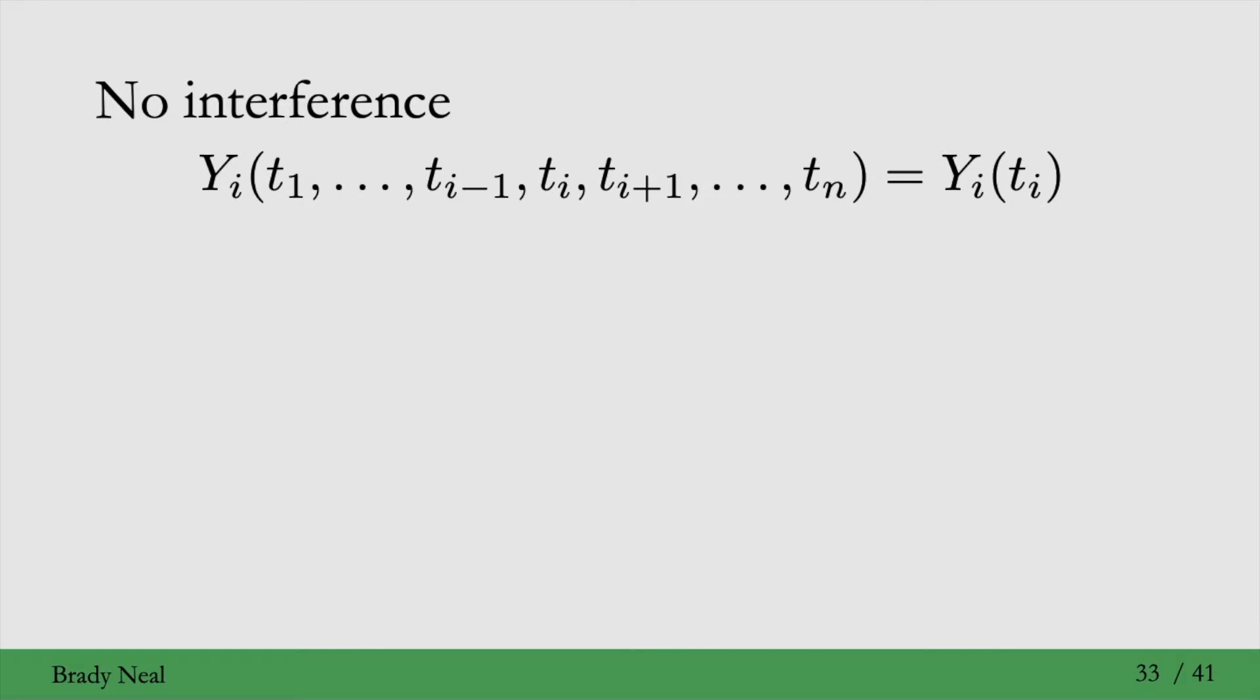The no interference assumption means that my potential outcome, which could feasibly be a function of the treatments for all of the other units, all of the other individuals in the population, 1 through n, is actually only a function of my own treatment. So that's this equality that we have here, where we end up with just Y_i(t_i).